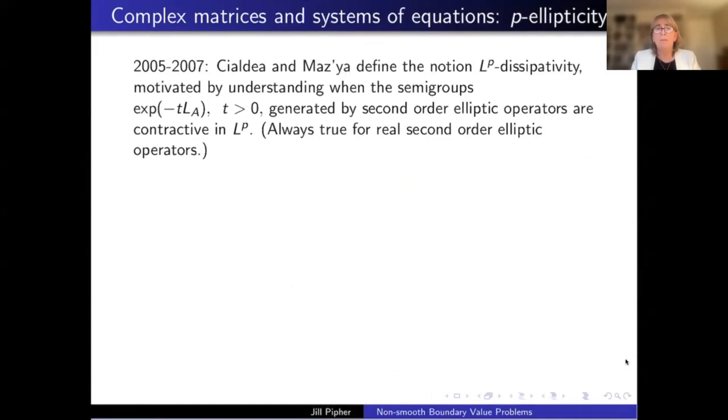But none of these properties hold for complex elliptic equations where the matrix might take on complex values and the solution does, or even for real elliptic systems of equations. There's no maximum principle, there's no boundary measures. So I want to introduce this concept, this algebraic concept, P ellipticity. So let me tell you where it came from really for us, for my work with Martin Dindosh. In the mid 2000s, Chaldea and Mazia defined a notion, LP dissipativity. This was motivated by their work on trying to understand some properties of this operator, this semi-group operator which is generated by one of these divergence form elliptic operators with a matrix A.